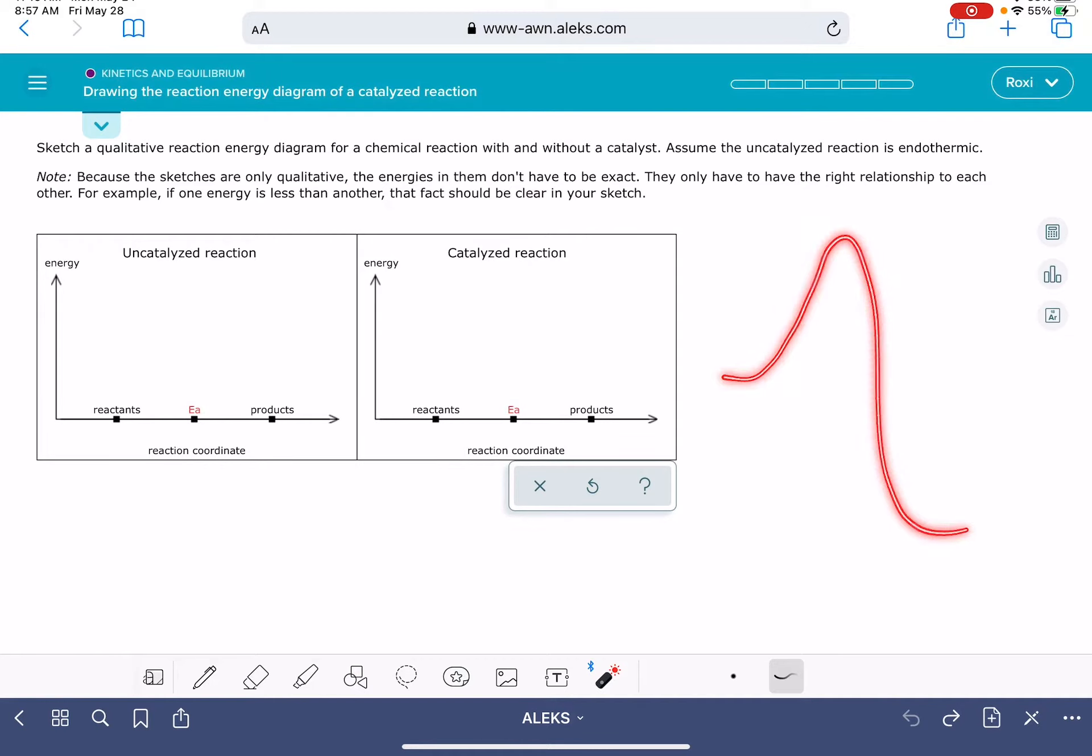Energy diagrams have a general shape that look kind of like this. It wants us to draw the diagram for the same reaction, just one is uncatalyzed and one is catalyzed. And it's also going to give you some information about whether the reaction is exo or endothermic.